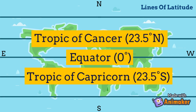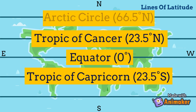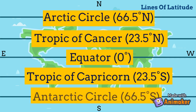Then come the lines of circles that cover the polar regions in the north and south, and are called the Arctic Circle and the Antarctic Circle respectively. The Arctic Circle in the North Pole measures 66.5 degrees north, while the Antarctic Circle in the South Pole measures 66.5 degrees south.